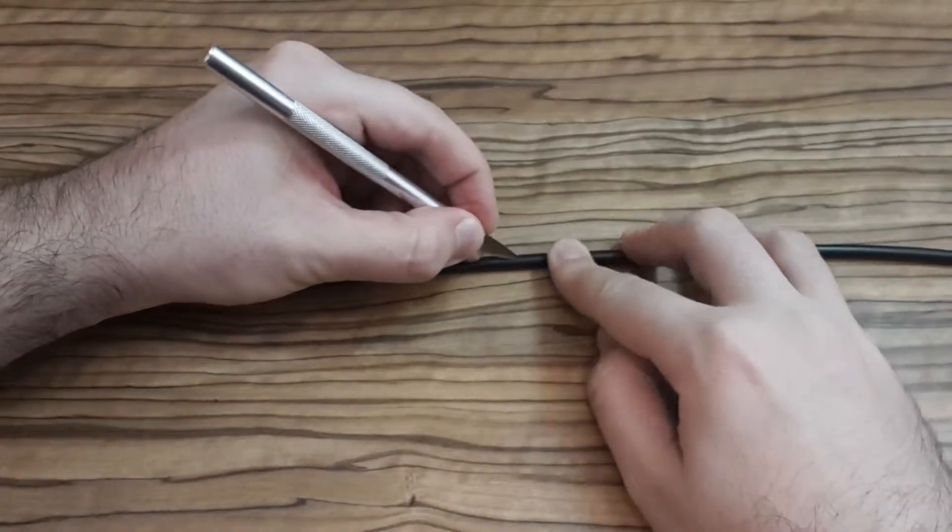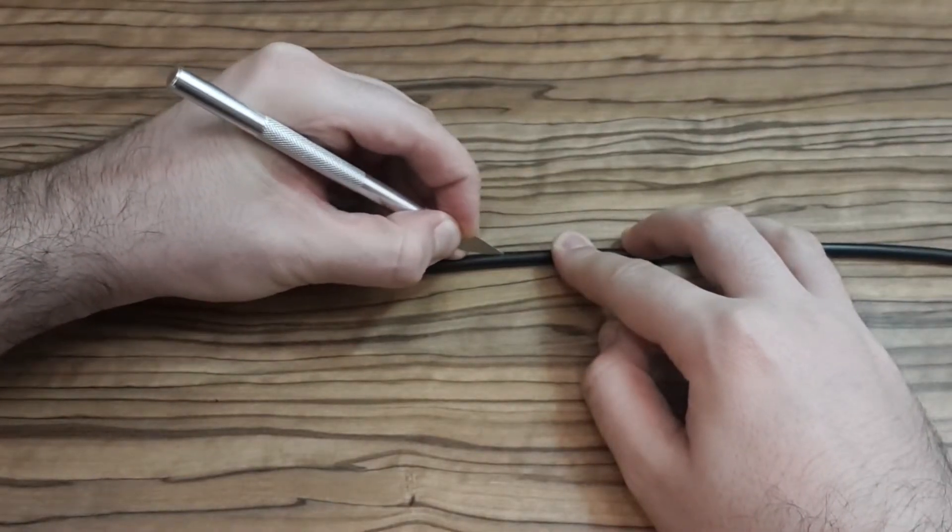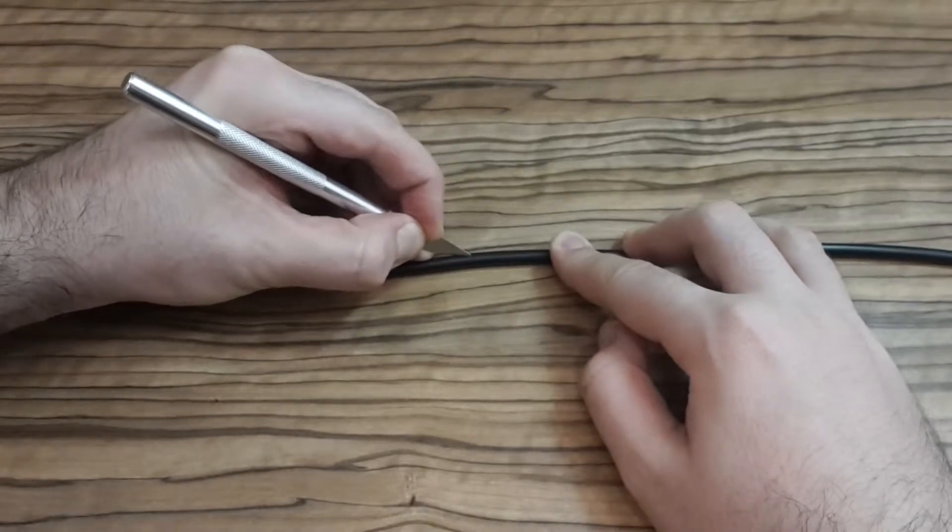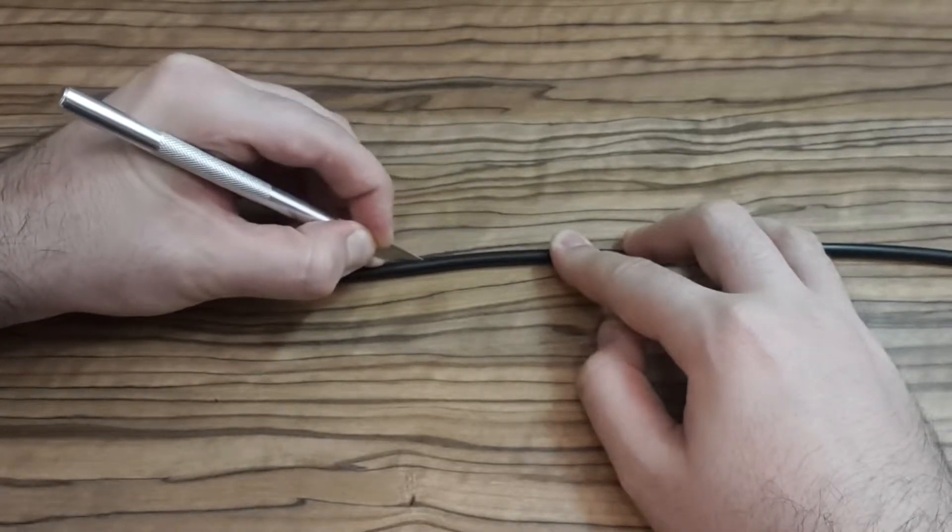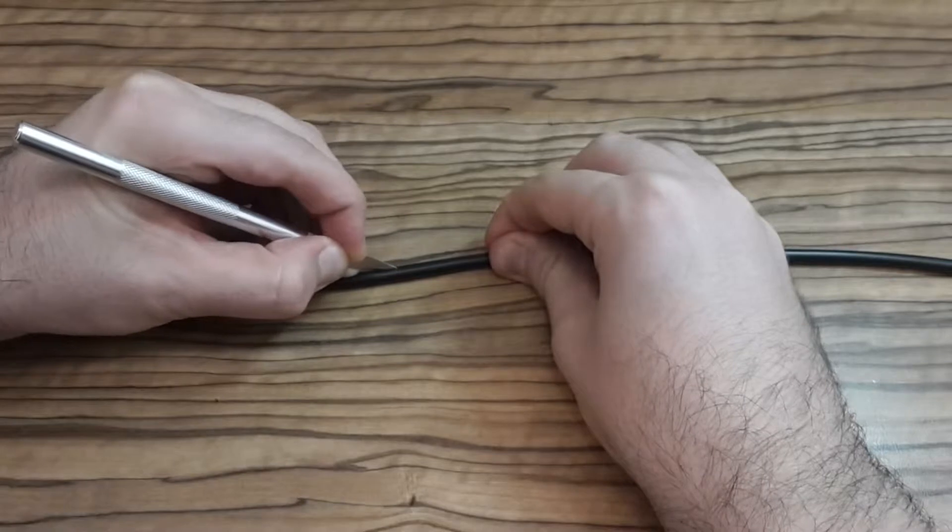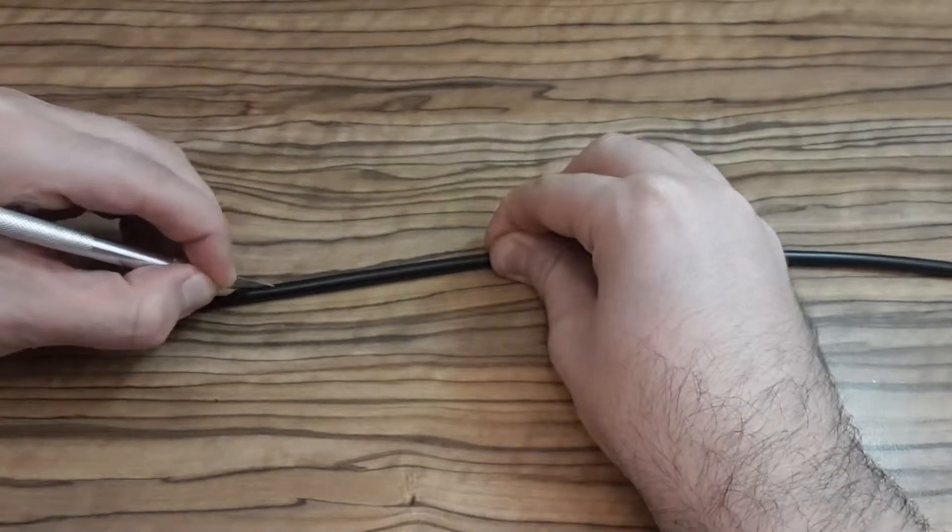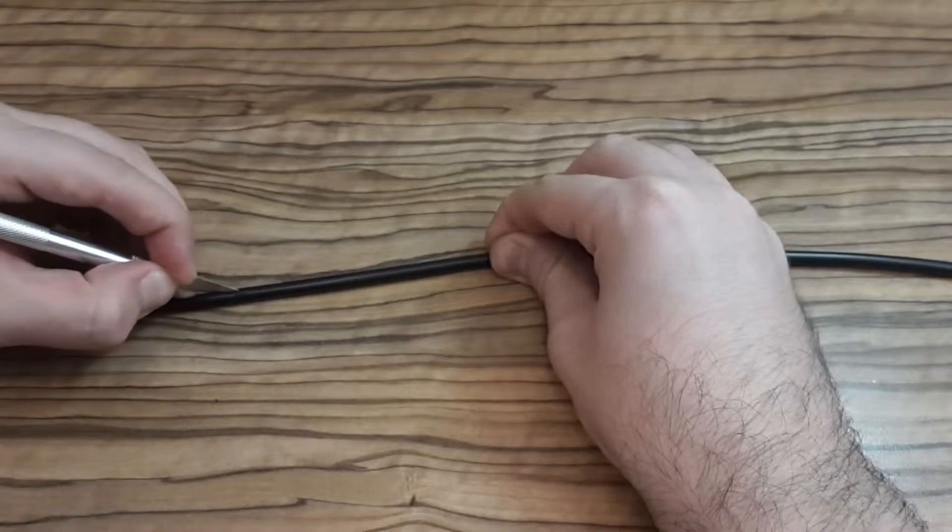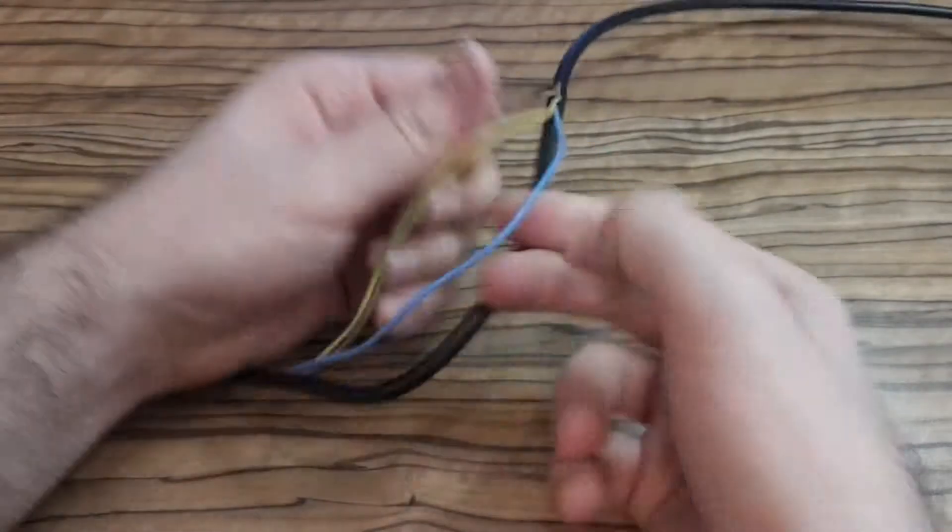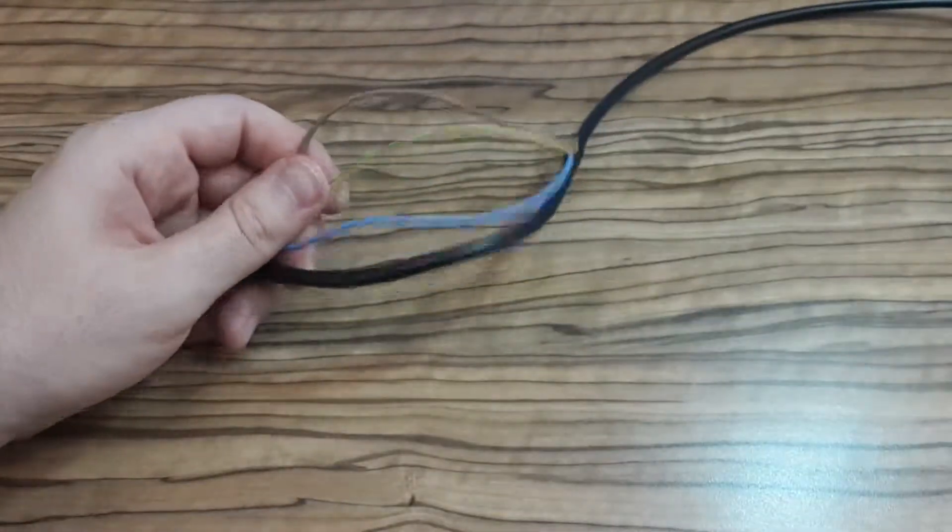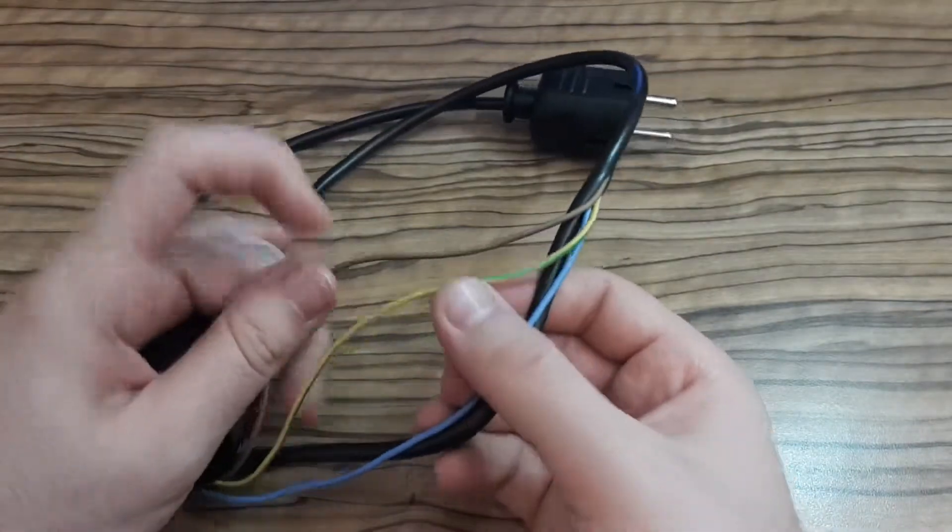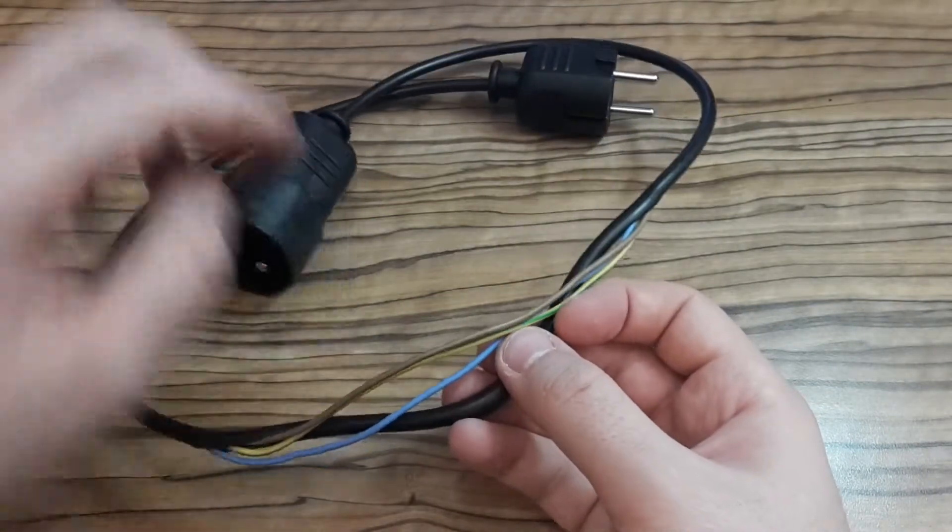Now I'm trying to cut the insulation of the cable, but I have to pay attention not to cut the wires inside. So it looks good. The line splitter is done.